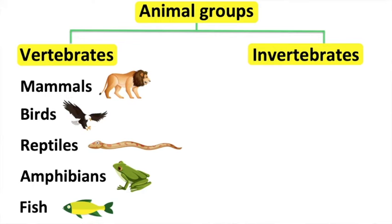Birds have feathers and they use their lungs to breathe. Birds lay eggs and their temperature is usually stable; therefore, they are warm-blooded animals. For example, an eagle.